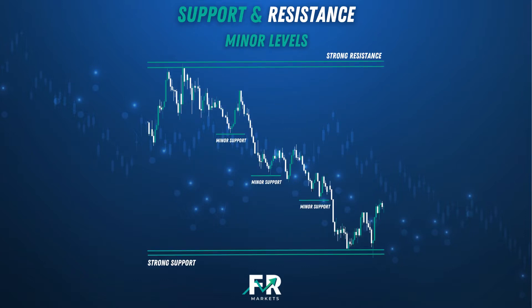Minor support and resistance levels don't hold up. For example, if the price is trending lower, it will make a low, then bounce, then start to drop again. That low can then be marked as a minor support level. As you can see on the screen, you've got a strong resistance level and a strong support level. You can see price moving up and down in between those two levels. Each time price makes a new low, it bounces off it a little bit and then goes down even further. Those levels you can mark as minor support levels.